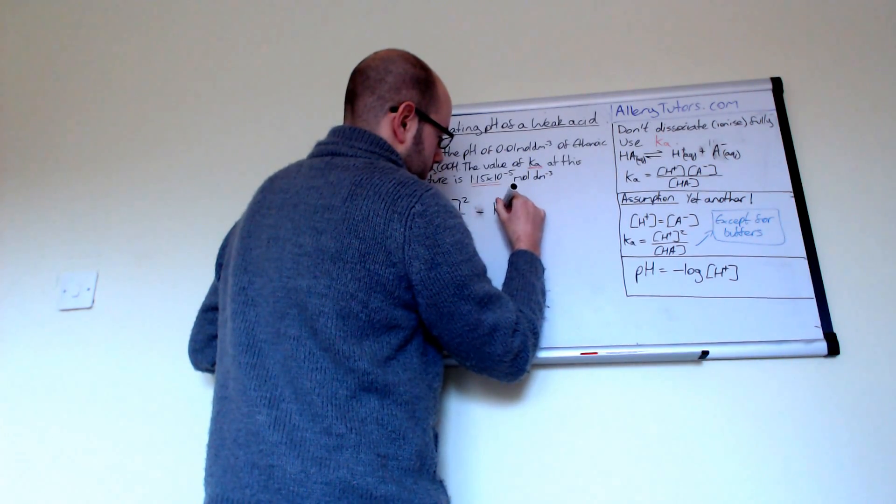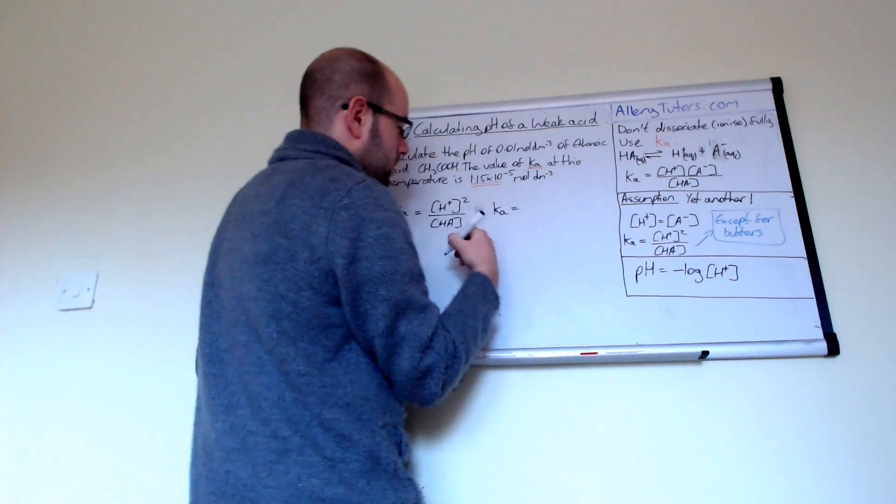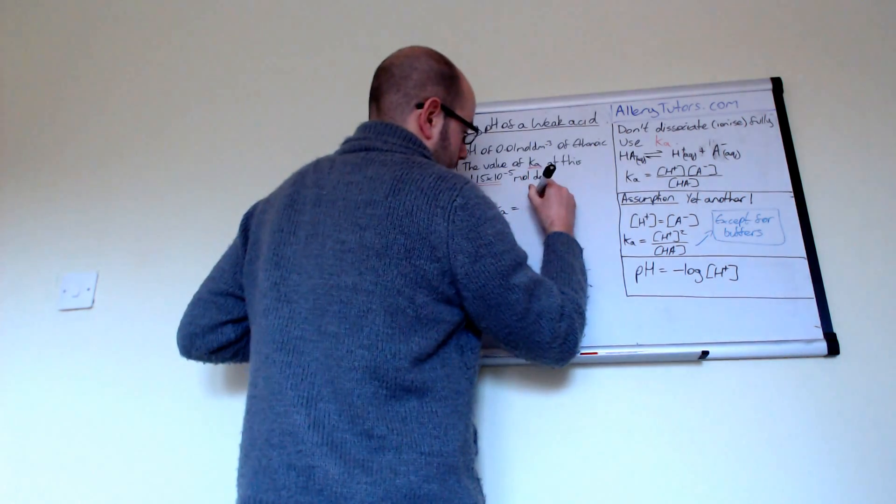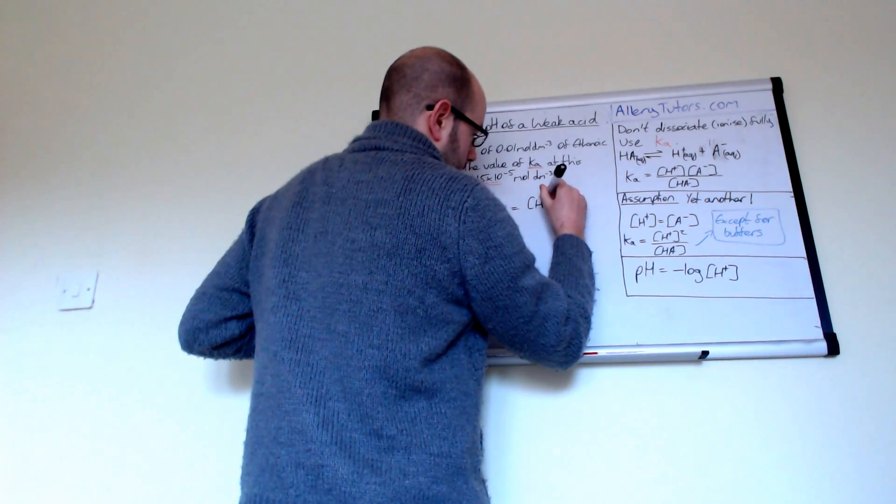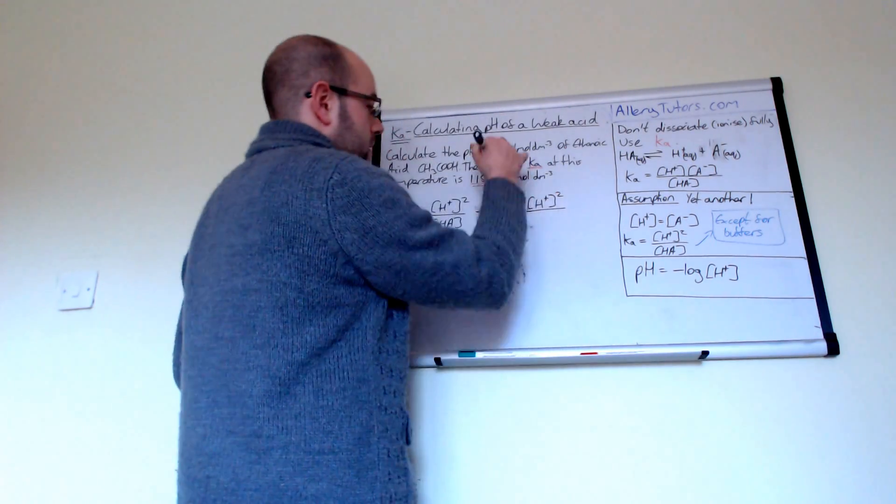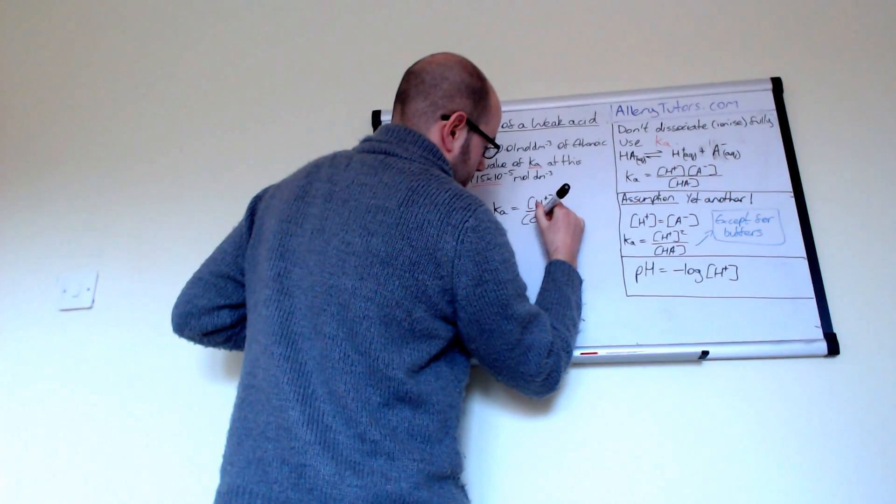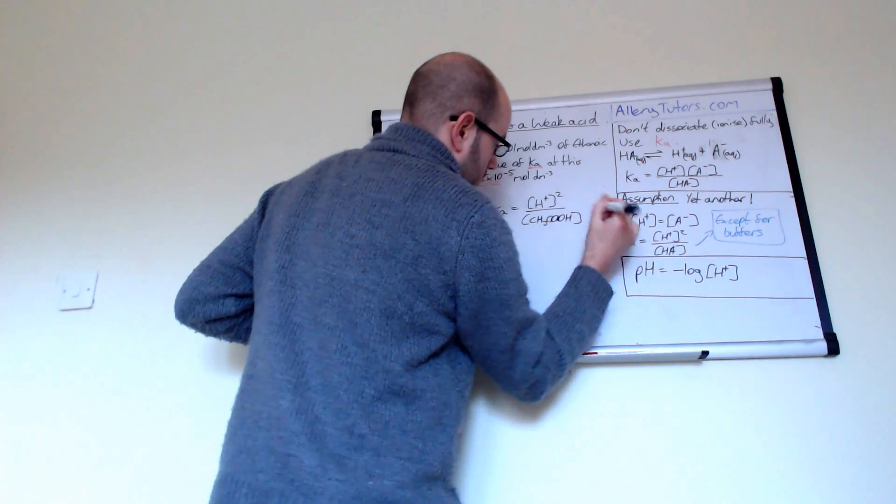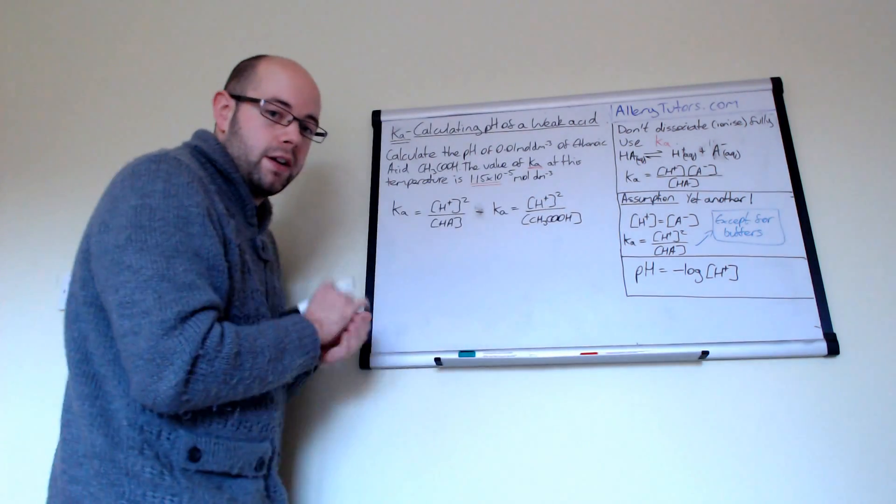of Ka was 1.15, will equal the concentration of H plus squared, which we don't know yet, because that's what we're trying to work out, divided by the concentration of ethanoic acid. So that's CH3COOH. And so that is our specific example.